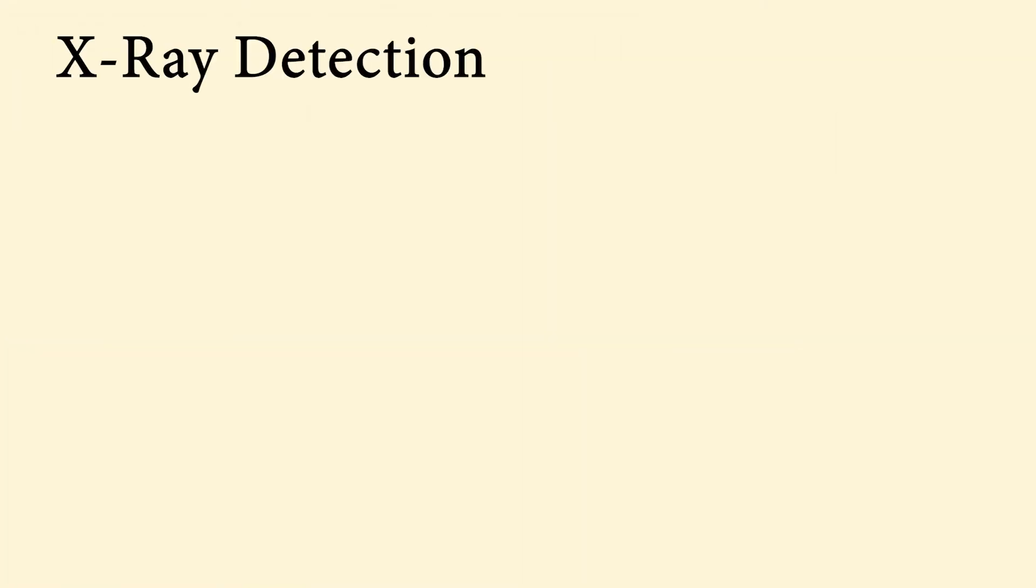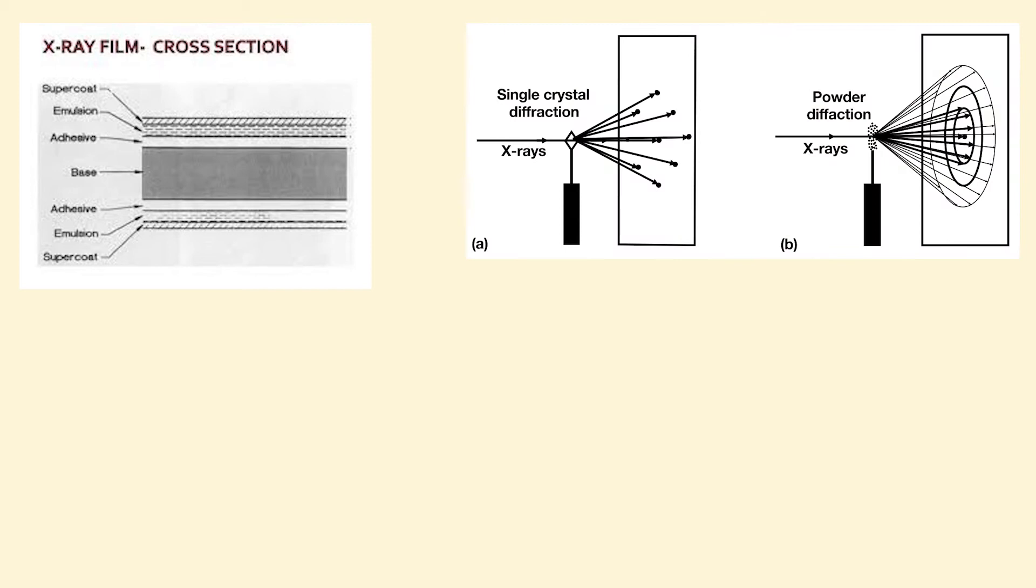Now, let's talk about how X-rays are actually detected. Photographic film served as the detector in earlier methods. The positions of the diffraction points correspond to individual Bragg angles. But nowadays, usually a radiation counter is used as a detector.